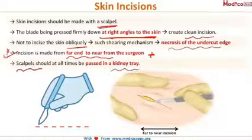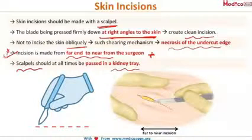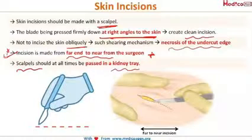Blades should always be passed in a kidney tray. If the kidney tray is not available, always hold the blade towards your end and then pass the surgical blade to the surgeon or nurse. Another important point that students often get wrong is that the sharpest portion of the blade is the belly of the blade. Do remember this — the sharpest point is the belly of the blade.